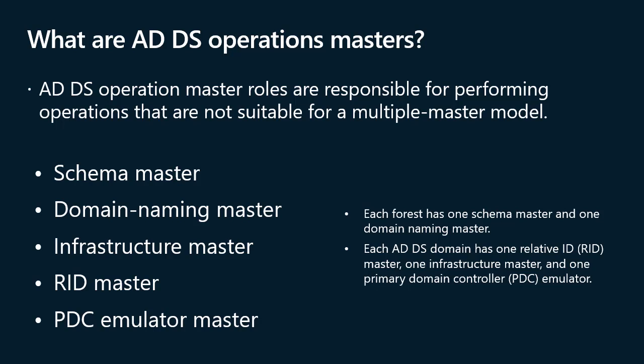The domain naming master is the domain controller you must contact when adding or removing a domain or making domain name changes — if unavailable, you cannot add domains to the forest. The schema master is where all schema changes are made — if unavailable, you cannot change the schema. The RID master allocates blocks of relative IDs (RIDs) to each domain controller to use when building security IDs (SIDs), ensuring no two domain controllers assign the same SID to different objects. If the RID master is unavailable, you may experience difficulties adding security principals to the domain.